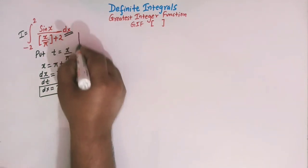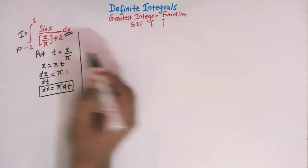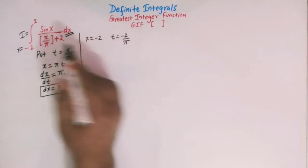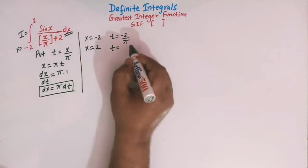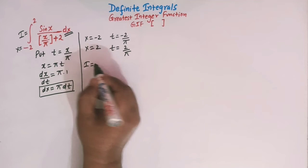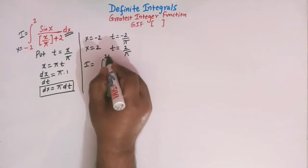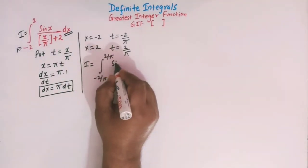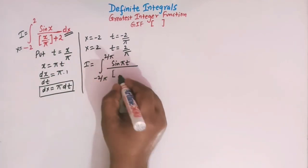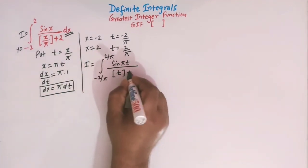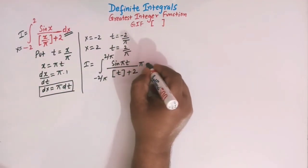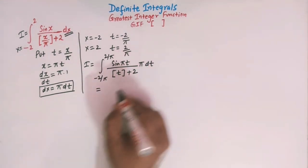Now let us change the limits. x varies from minus 2 to 2, so when x is minus 2, t is minus 2 over pi, and when x is 2, t is 2 over pi. The integral now takes the form from minus 2/π to 2/π of sin(πt) over the greatest integer of t plus 2, and for dx we substitute pi·dt.